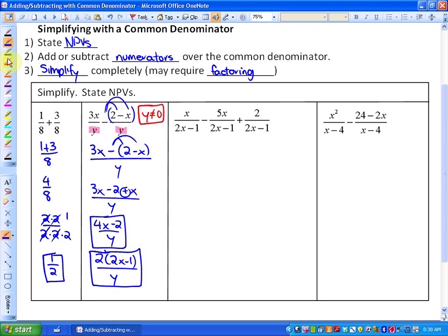In our third example, we have a common denominator in all cases of 2x minus 1. So our non-permissible value would be that x cannot be one-half. If you struggle with non-permissible values, just visit a previous lesson. It would be x minus 5x plus 2 over a common denominator of 2x minus 1.